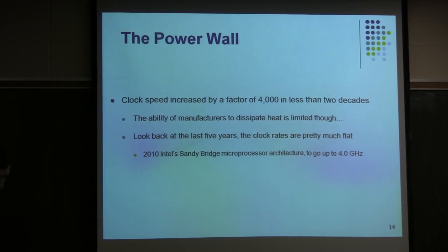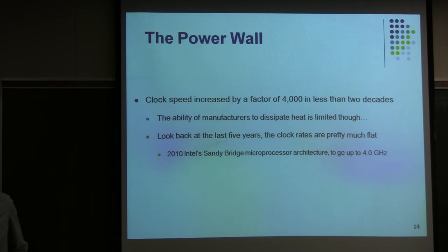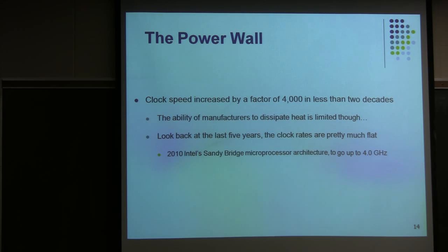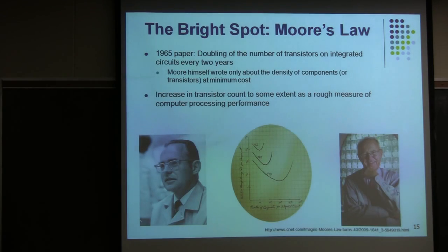Looking back at how people reduced simulation time, almost entirely they increased the clock rate. Over the last two decades the clock speed increased by a factor of 4,000. But over the last two and a half to three years, clock rates kind of got stuck at around 2.5 to 3.5 gigahertz. The next Intel design — Sandy Bridge — is going to be close to 4.0 gigahertz, but it's nothing spectacular. So the solution has to come from somewhere else.